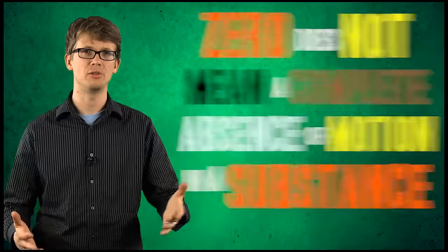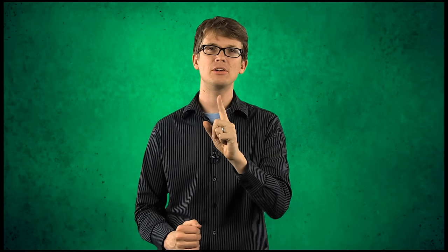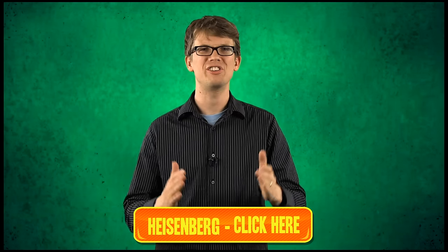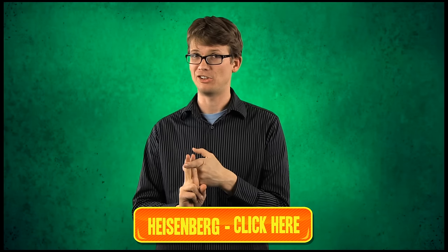Physicists know that absolute zero does not mean a complete absence of motion in a substance. Instead, zero degrees Kelvin marks the state of minimal motion of a substance's particles. That's because of Heisenberg's uncertainty principle, which says that for any particle in the universe, it's impossible to know both its momentum and its exact position at the same time.